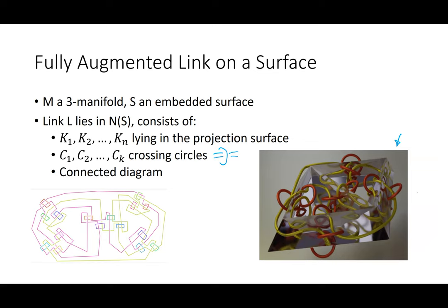I put this into SnapPy to see what the hyperbolic geometry looks like. This is my attempt at redoing John's diagram in SnapPy — a fully augmented link on a genus-two surface. You can see the surface, with three crossing circles going over one section, three over another, four up the middle, and so on. These are a little more complicated and harder to draw, but locally it's straightforward: links on the projection surface and then crossing circles.